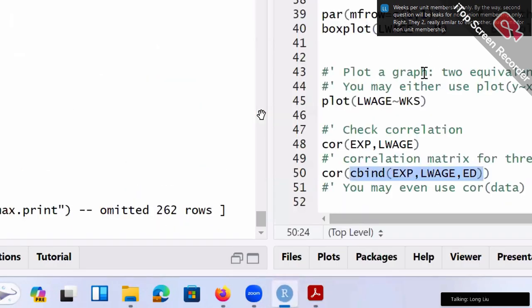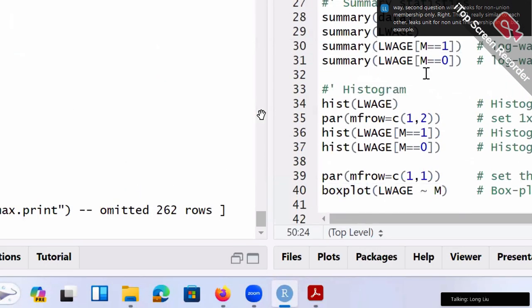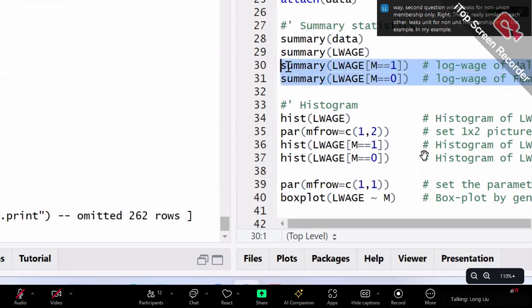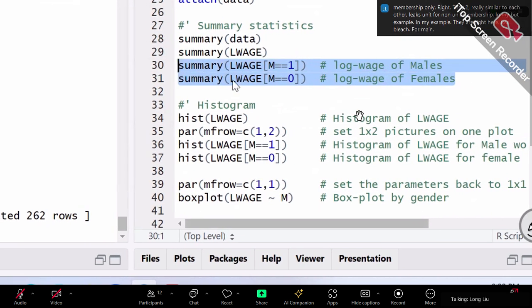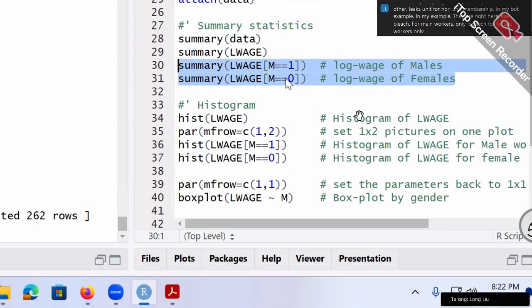In my example, they are right here. Log wage for male workers only, log wage for female workers only. In your case, it will be summary information for weeks, which is WKS. Basically, replace my log wage by WKS. Replace my log wage by WKS, weeks.